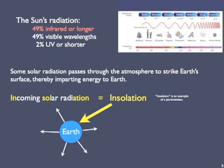From our perspective here on Earth, we call the incoming solar radiation insolation, which is a portmanteau. A portmanteau is a word that combines parts of other words, like smog is a combination of smoke and fog. In this case, it's incoming, technically incident, solar radiation, so insolation.